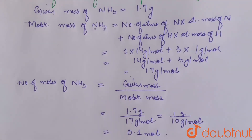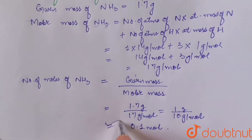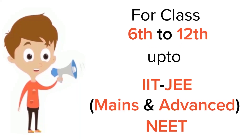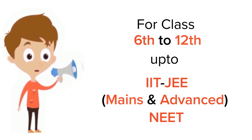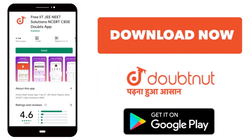Hence, the number of moles of ammonia equals 0.1 mole. So the number of moles of ammonia present in the gas jar is 0.1 mole. Thank you. For class 6 to 12, IIT JEE, and NEET level — trusted by more than 5 crore students — download the DoubtNet app today.